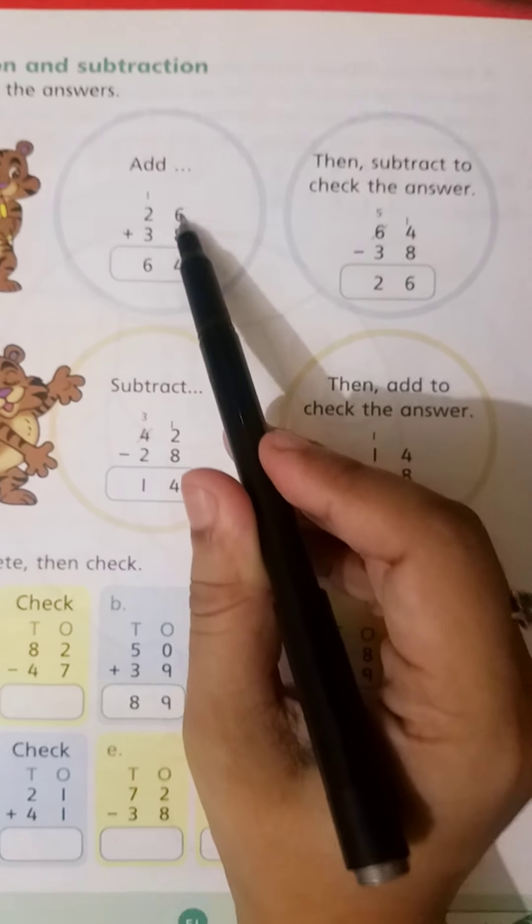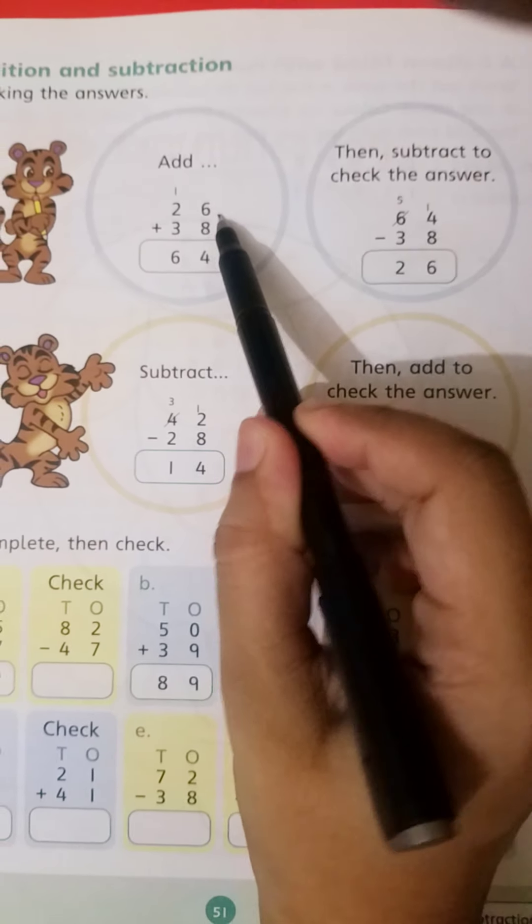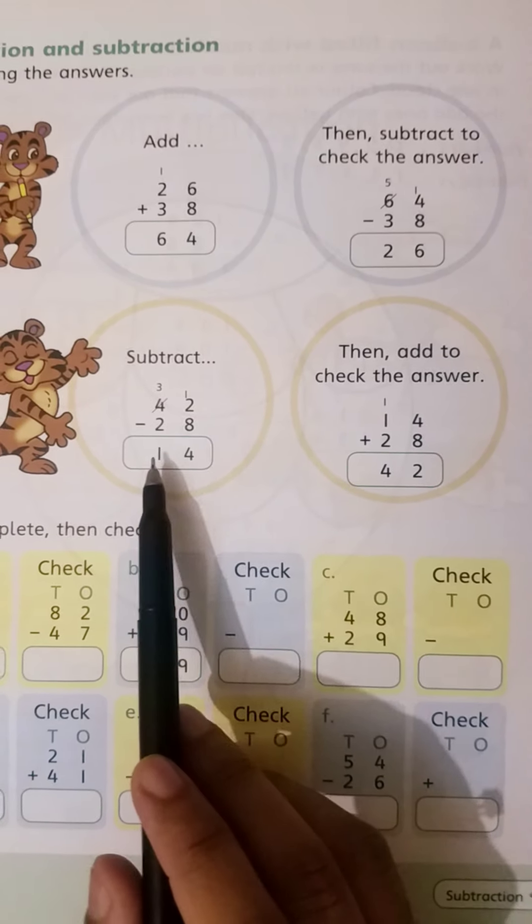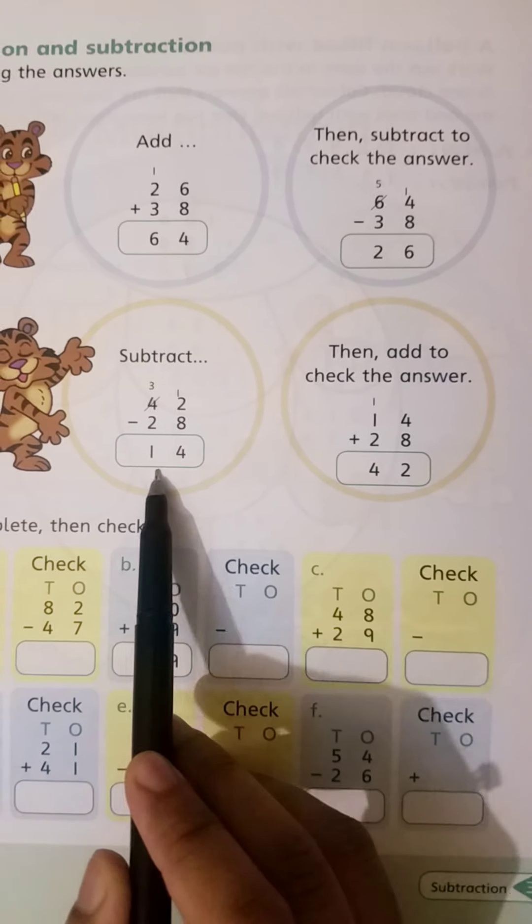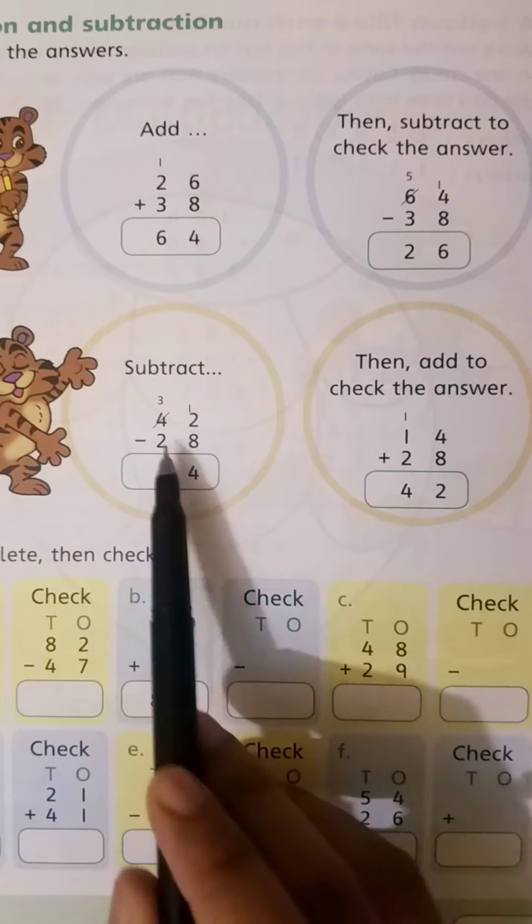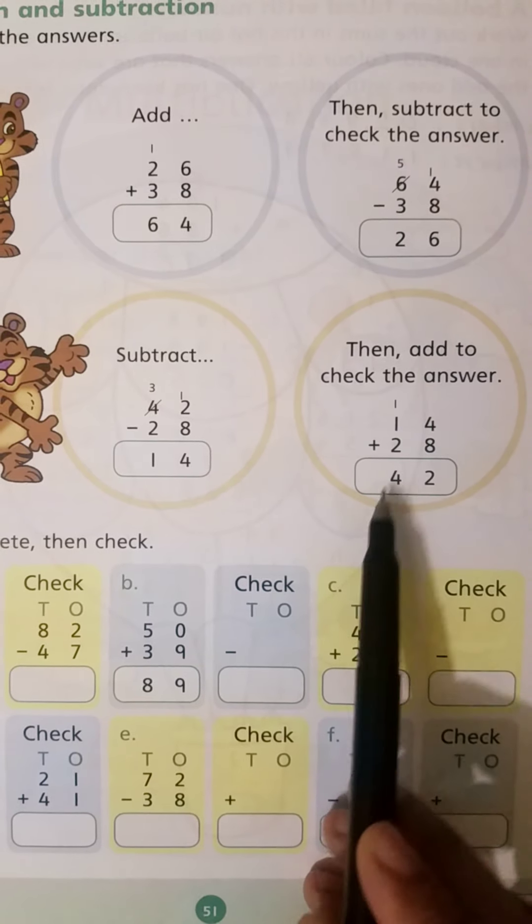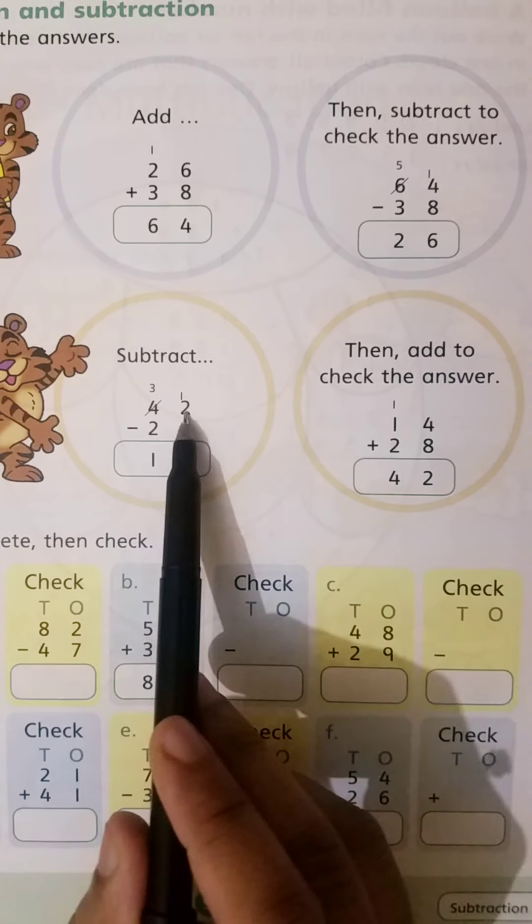And the answer must be the first number of this addition question. Similarly, for subtraction, if a subtraction question is given, then we will find the answer and add the second number. Then the answer will be the first number.